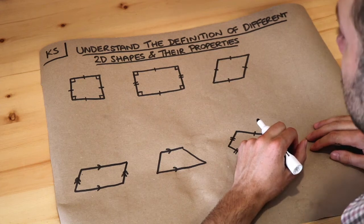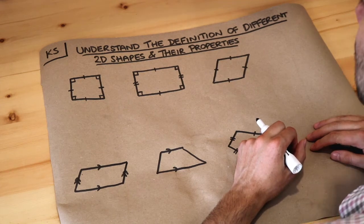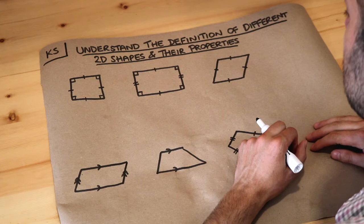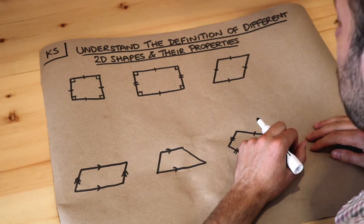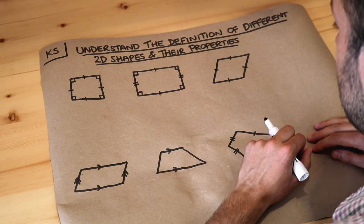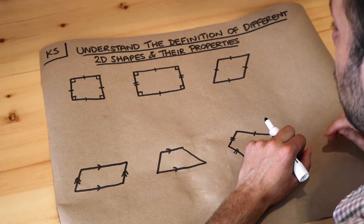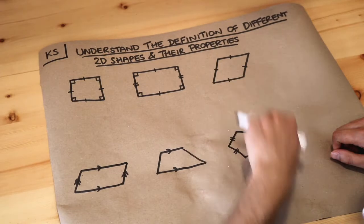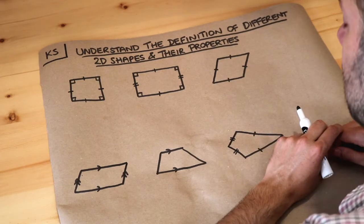Hello and welcome to this Dr. Ross Mass key skill video on understanding the definition of different 2D shapes and their properties. We're going to concentrate on quadrilaterals in this particular video.